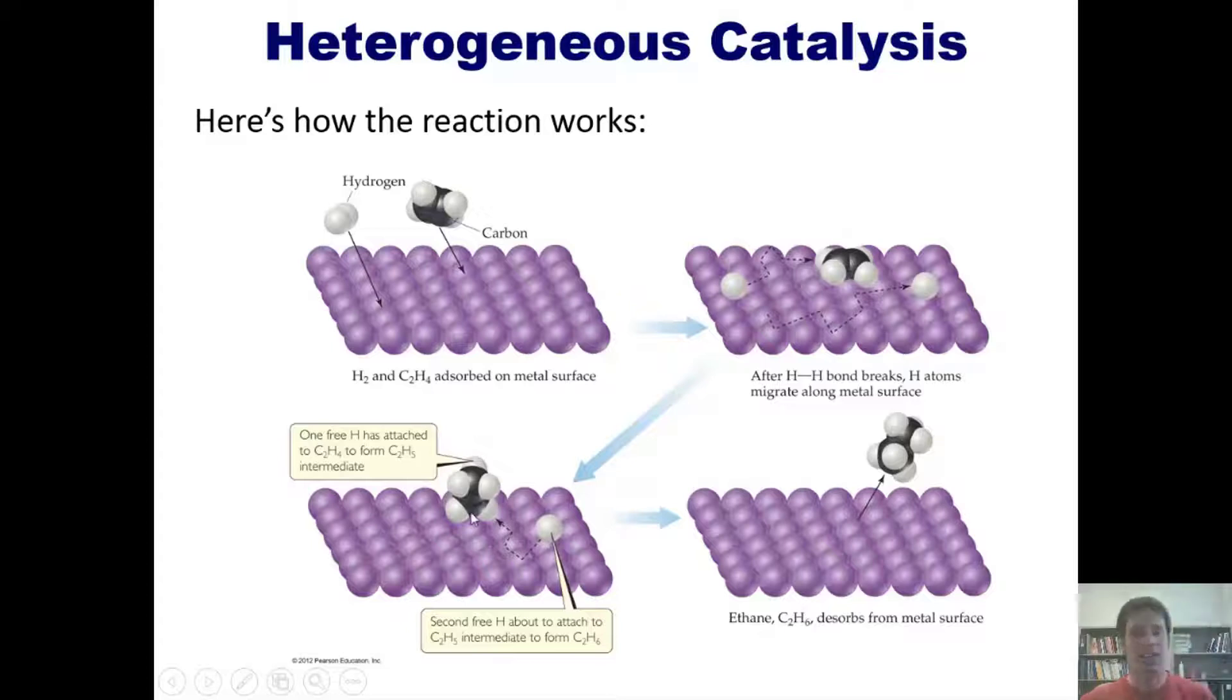You'll notice that in the overall process, the catalyst ends up being the same at the end as it was in the beginning. It hasn't been permanently transformed—that's why it's a catalyst. In this case, the catalyst is in a different physical state from the reactants. The catalysts are solid and these reactants are both gases. That's why this is an example of heterogeneous catalysis.